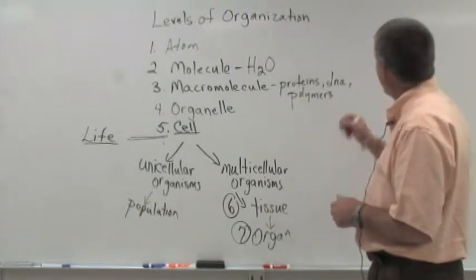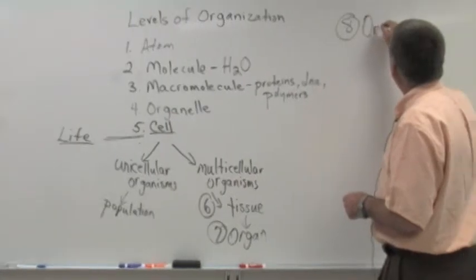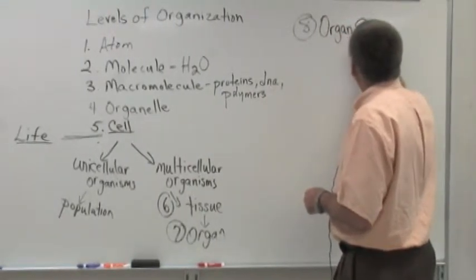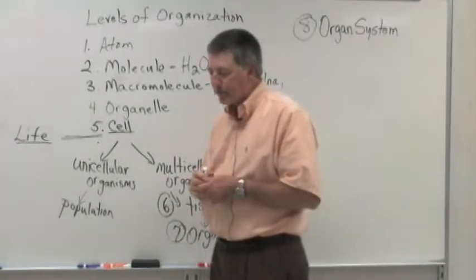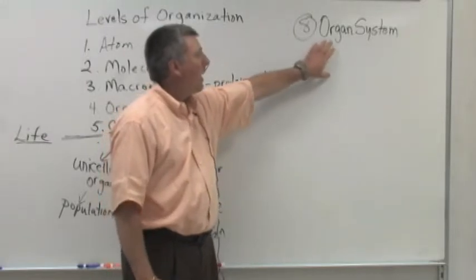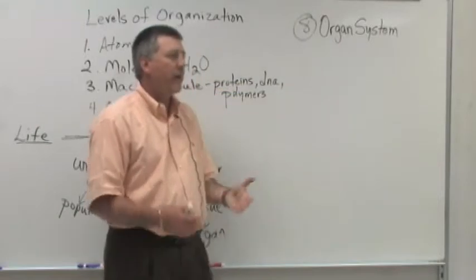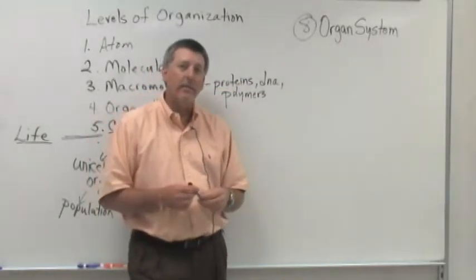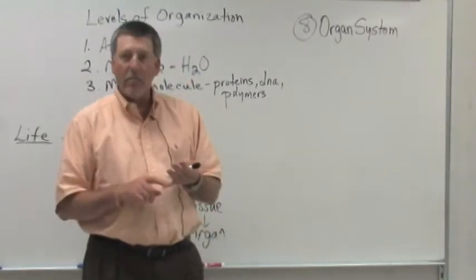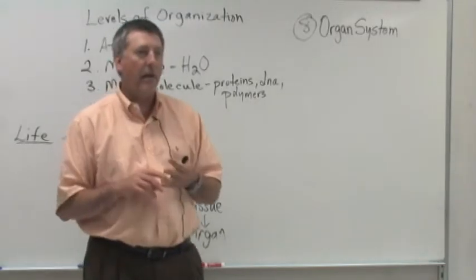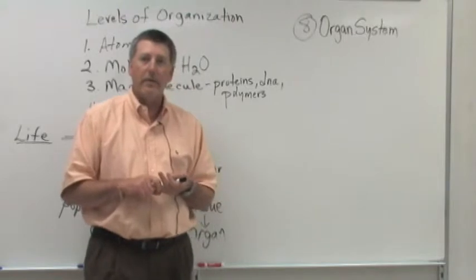Beyond the organ level of organization is what we call the organ system level of organization. Complex animals may have many levels, many organ systems. For example, I typically recognize 11 organ systems in humans and those would include things like the integumentary system which is your skin and hair and nails. The skeletal system for example is an organ system.